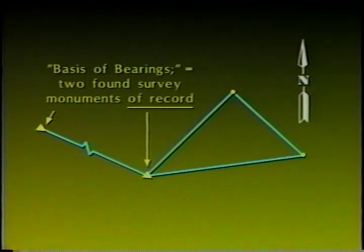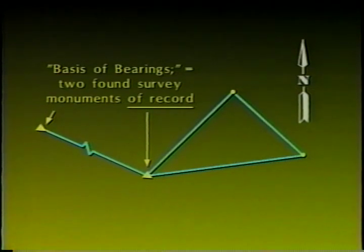The two monuments could represent a NAD 83 station for the instrument setup, and the azimuth mark could be the sun. If the survey covers a large area, many record maps and adjacent deeds may be involved that can have different basis of bearings. In this case, it is necessary to reconcile these differences.